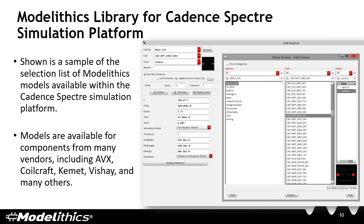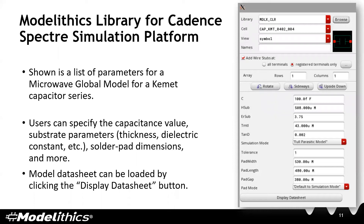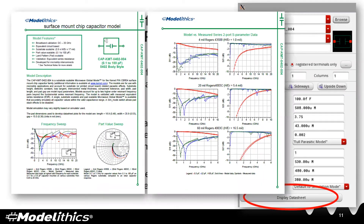As an example, let's look at a microwave global model for a Kemet capacitor series. As you can see in this user interface, users can specify the capacitance value, the substrate parameters like thickness and dielectric constant, as well as the solder pad dimensions. You can also click on the 'Display Data Sheet' button at the bottom to display the data sheet. This is a typical model data sheet — you can see model features, model description, and various plots across various substrates and different part values. The data sheets come with a lot of information.